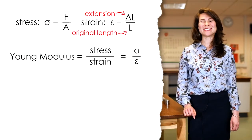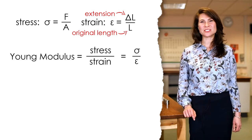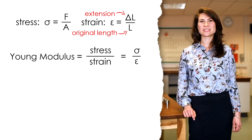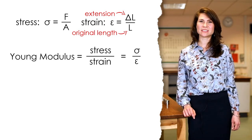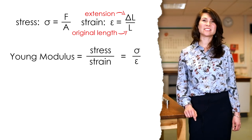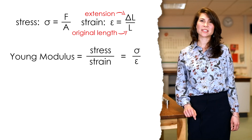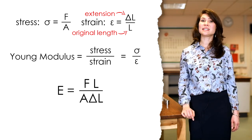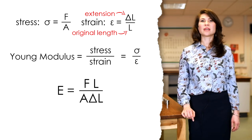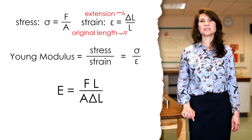The Young's modulus is a really important property in engineering as it tells us how easily a material will stretch or deform. The Young's modulus is defined as the ratio of tensile stress to tensile strain, where stress is the force applied per unit area, and the strain is the extension relative to original length. The Young's modulus is given the letter E, and this is equal to FL over A delta L.